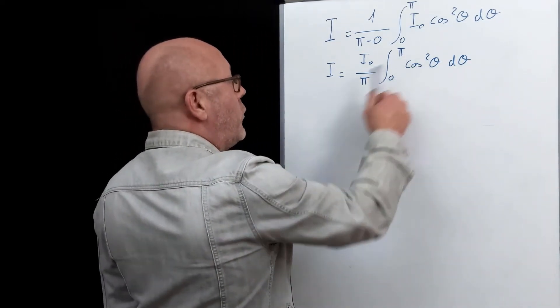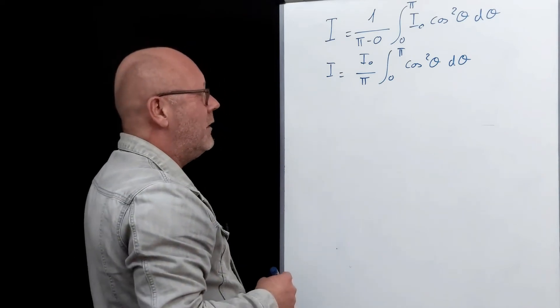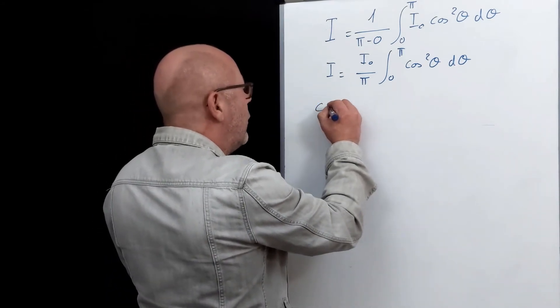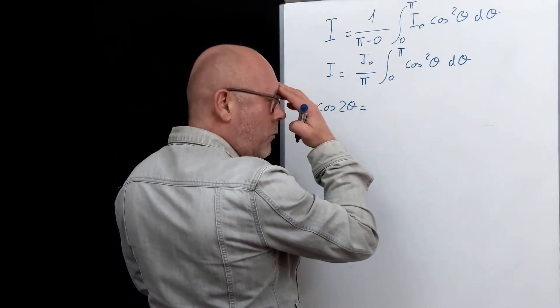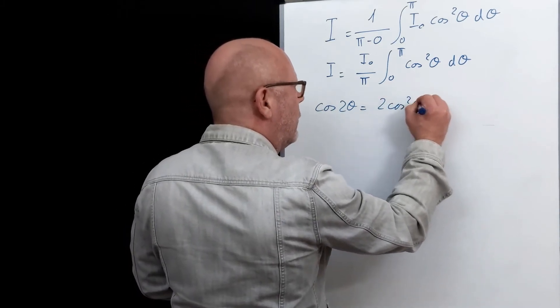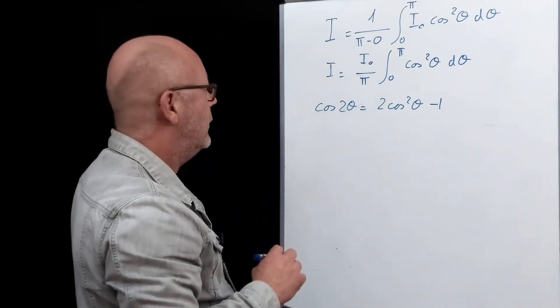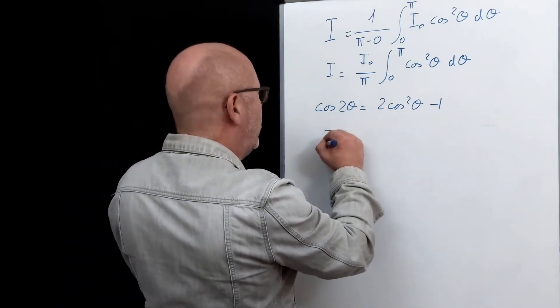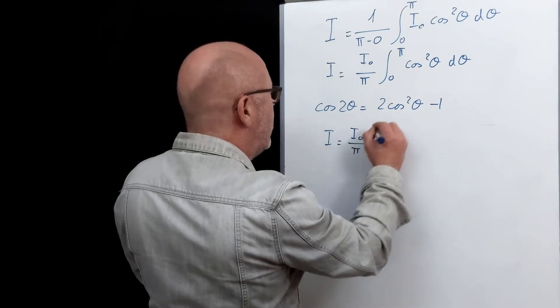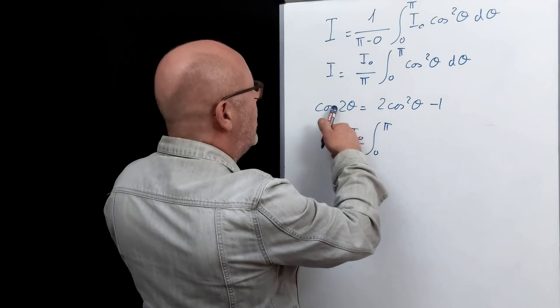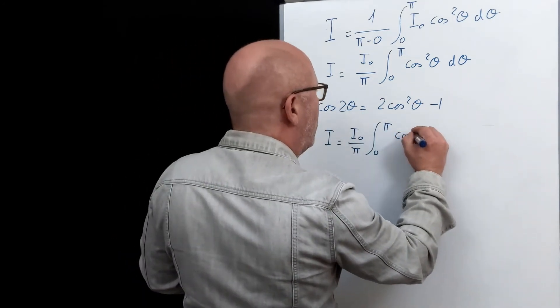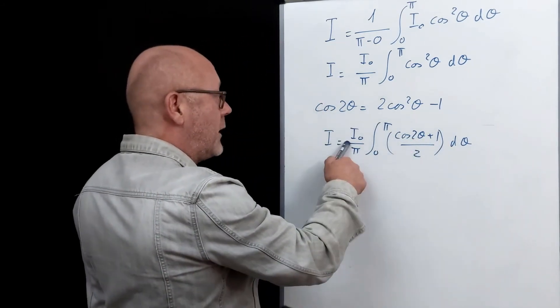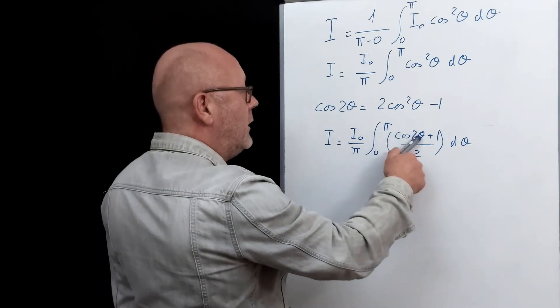I have to integrate cos squared θ. I don't like that. Instead, I'm going to use a trigonometric identity to simplify the integration. I remember that cos of 2θ equals 2cos squared θ minus 1. So if I rearrange to find cos squared θ, I'll just rearrange it directly into the integral. I0 over π, 0 to π. So that gives me cos 2θ plus 1 divided by 2. 2 is a constant, I can remove it. So I end up with cos 2θ plus 1. So I rewrite it down. I0 over 2π, the integral between 0 and π of cos 2θ plus 1.